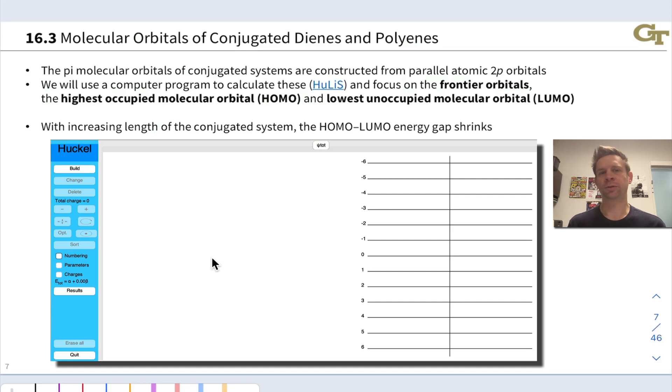The pi molecular orbitals of conjugated dienes and polyenes result from the overlap of adjacent p orbitals, 2p orbitals in the case of second row elements, that are lined up in a side-on fashion. They're delocalized, and we'll see lobes on three or more atoms in all of these orbitals.